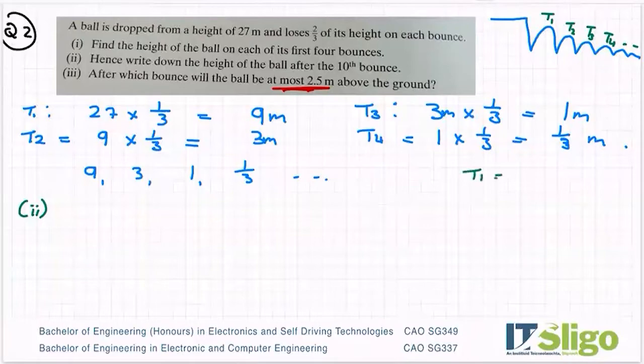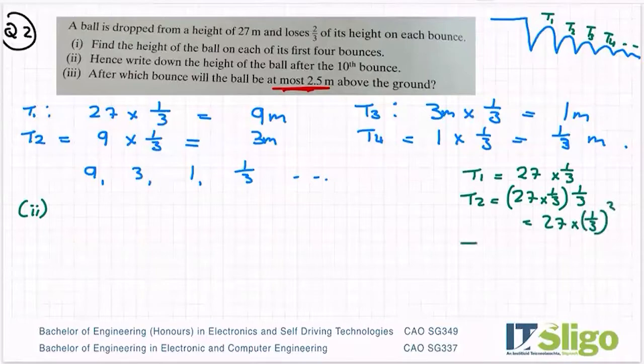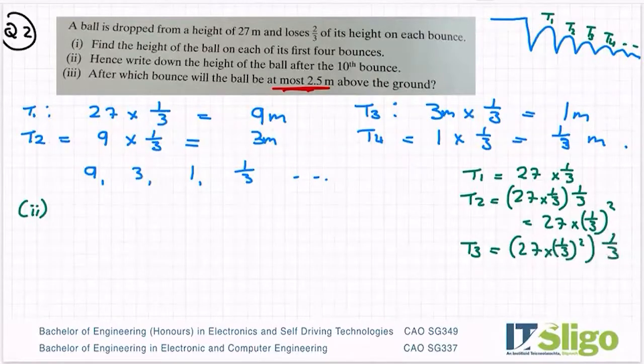So in my first one, T1, it was 27 multiplied by a third. My second one, it was 27 by a third, that's my T1, multiplied by a third again. Or 27 by a third squared. T3 is 27 by a third squared, so it'll be 27 by a third cubed. In other words, I'm looking at my original one and I'm seeing what am I doing to it. So that's how I got my nine for my first one. I then took my nine and got a third of it again. I then took my three and I got a third of it again.